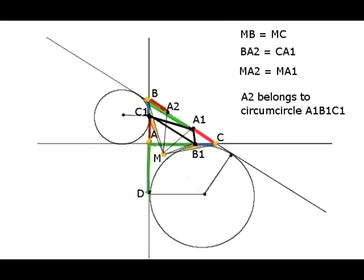We can recall that the two segments marked red, BA2 and CA1, have equal length. From the fact that M is equidistant from B and C, we can conclude that M is also equidistant from A1 and A2. Since MA1 is the radius of the circumcircle of triangle A1B1C1, MA2 is also a radius of the same circle, so point A2 belongs to the circumcircle of triangle A1B1C1.